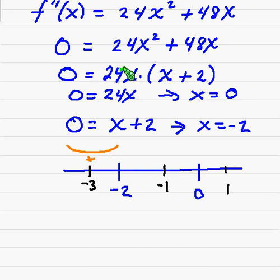No, I'm sorry. Negative 1 plus 2 is a positive 1. So we get a negative times a positive, that's negative. So it's concave down between negative 2 and 0. And then we plug 1 in, and that's positive. Therefore, it's concave up.